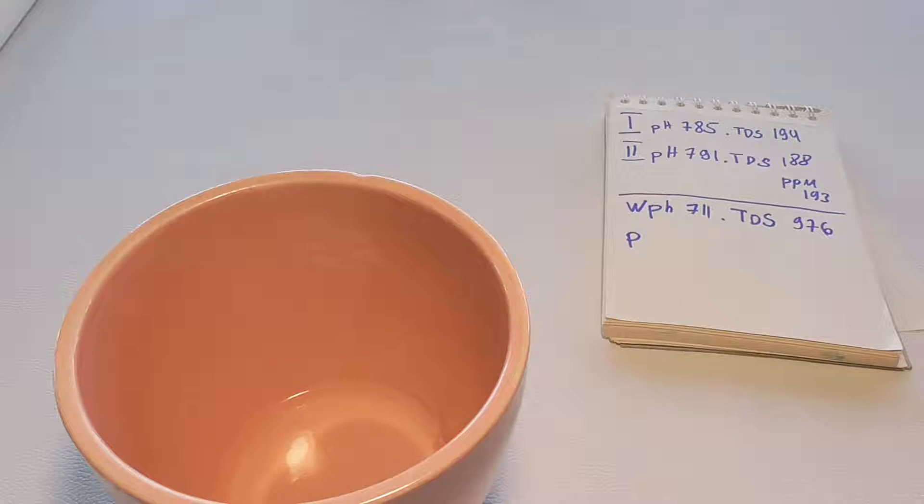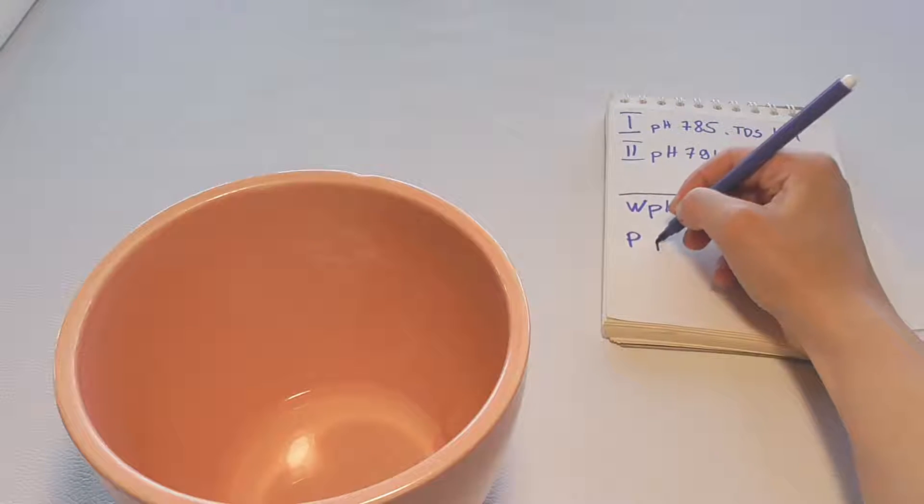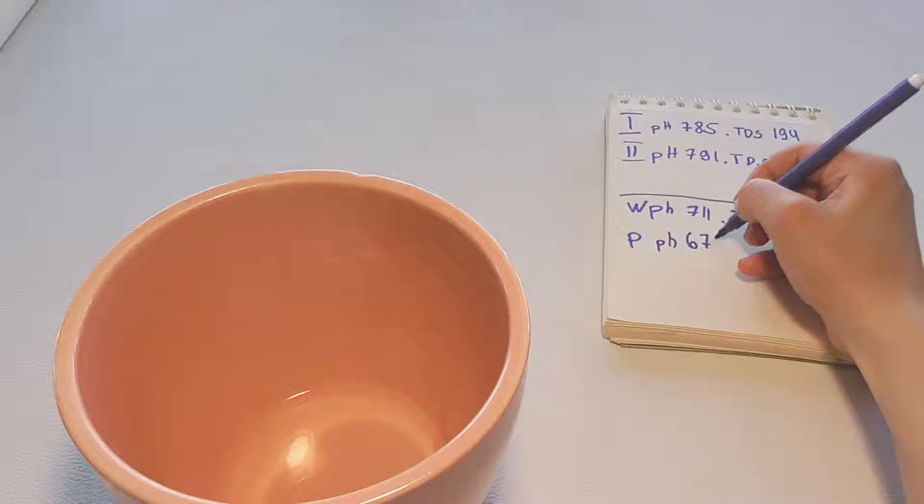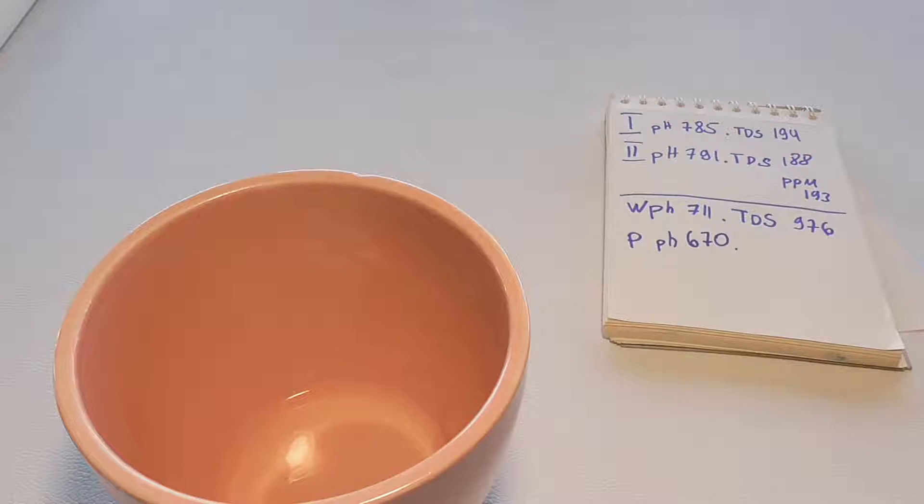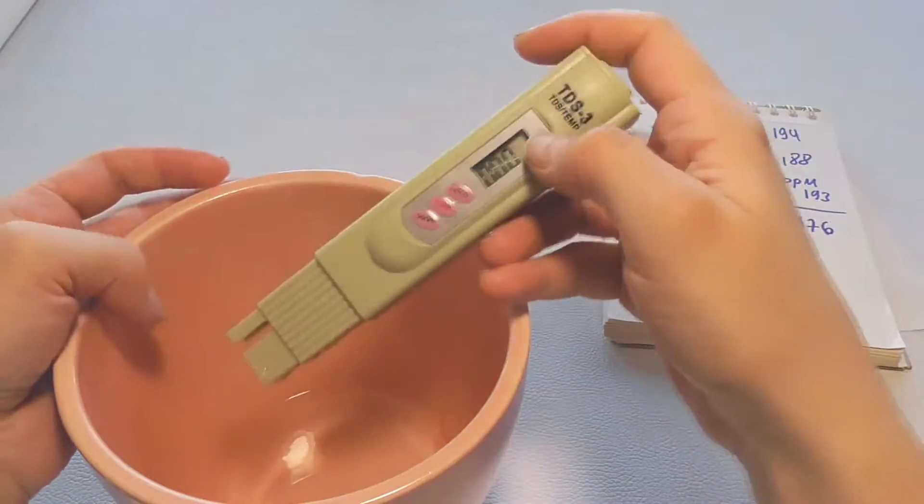Usually the pH level of water used to grow orchids can vary from 4 to 7.5. The optimal pH level should be between 5.5 and 6.5.